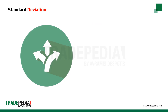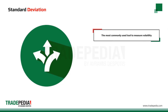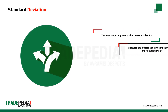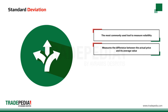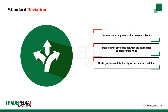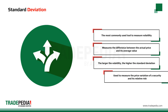The standard deviation is the most commonly used tool to measure volatility. It measures the difference between the actual price and its average value. The larger the volatility, the higher the standard deviation. Standard deviation is used to measure the price variation of a security and thus its relative risk.